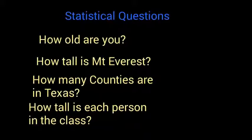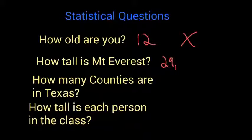Let's look at a couple of these questions. If I ask, how old are you? You could give me an answer of 12. That's only one number, so it's not statistical. If I asked how tall is Mount Everest? You could give me an answer of 29,029 feet. Again, only one number is the correct answer, so that question is not statistical.